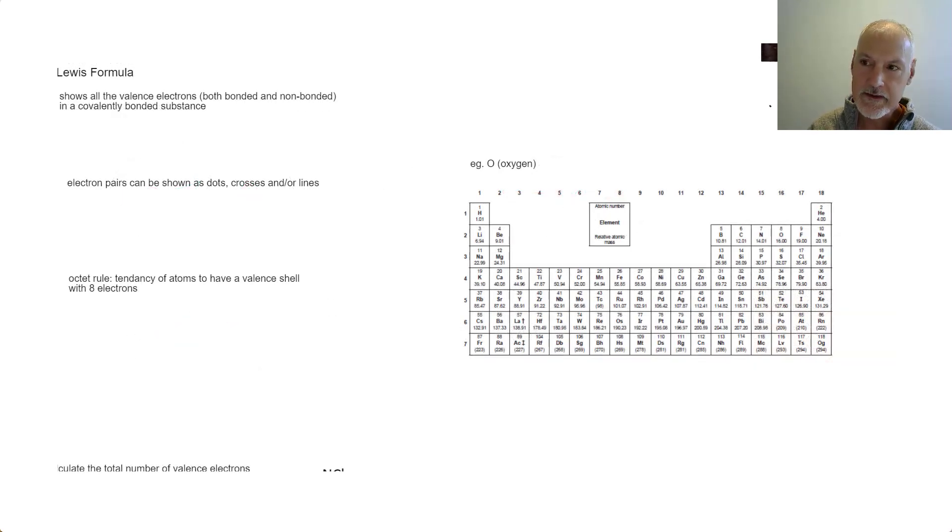Gilbert Lewis, an American scientist, invented a technique or means by which we can picture how these bonds form. And it shows all of the valence electrons, both bonded and non-bonded, in a covalently bonded substance.